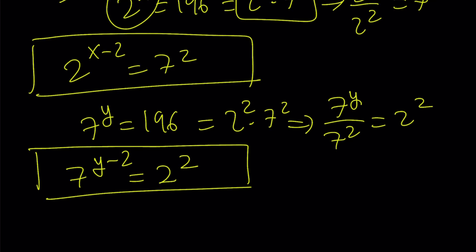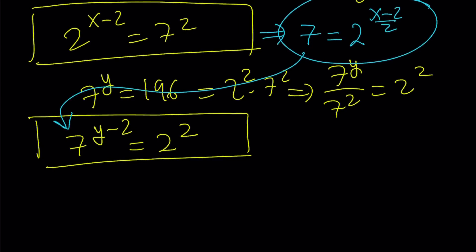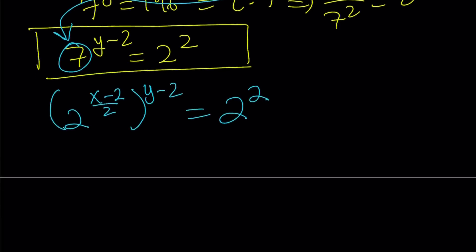Well, here's what I can do. I can go ahead and isolate one of these numbers. For example, how about isolating 7 here? Raise both sides to the power of 1 half. So 7 is going to equal 2 to the power of x minus 2 divided by 2. And let's go ahead and substitute that here. And let's see what we're going to get. We're going to get something super duper nice. So I have 2 to the power of x minus 2 over 2, which replaces the 7. And raise it to the power of y minus 2. And that's going to equal 2 to the second. Notice that we have the same base now.